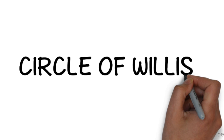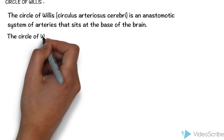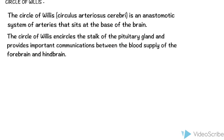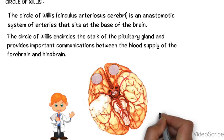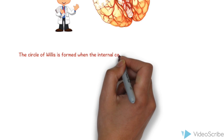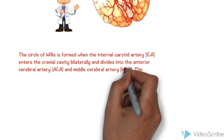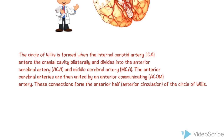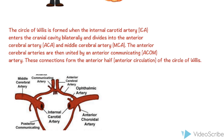Now we will study the Circle of Willis. It is an anastomotic system of arteries that sits at the base of the brain, encircles the stalk of the pituitary, and provides important communication between the blood supply of the forebrain and hindbrain. It is formed when the internal carotid artery enters the cranial cavity bilaterally and divides into the anterior cerebral artery and middle cerebral artery. The two anterior cerebral arteries are then united by the anterior communicating artery, forming the anterior half of the Circle of Willis.